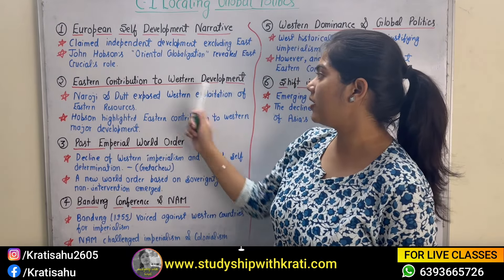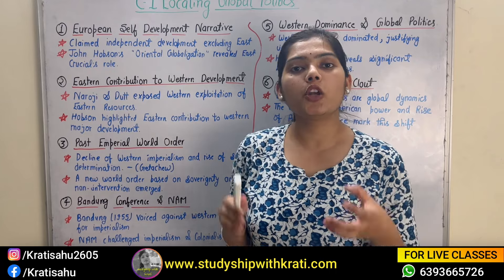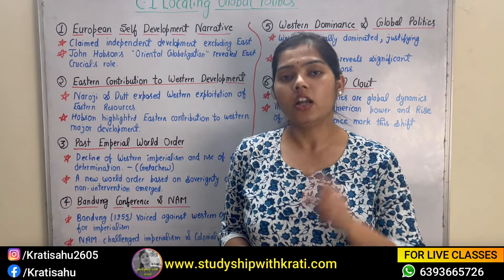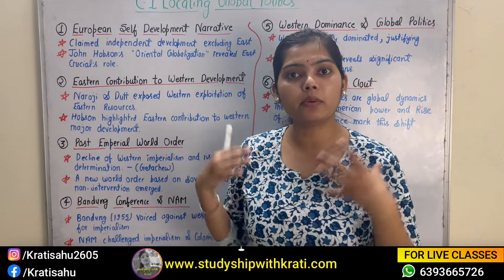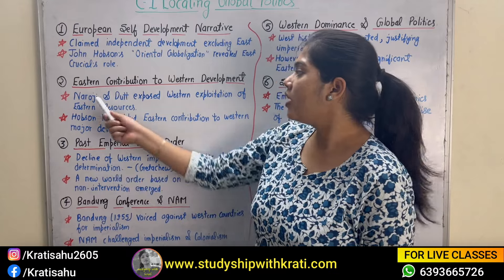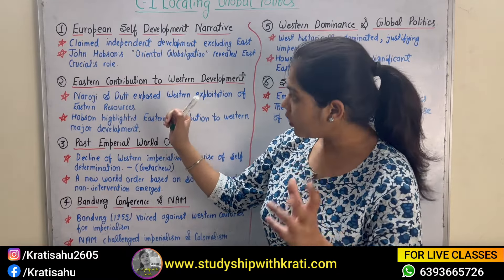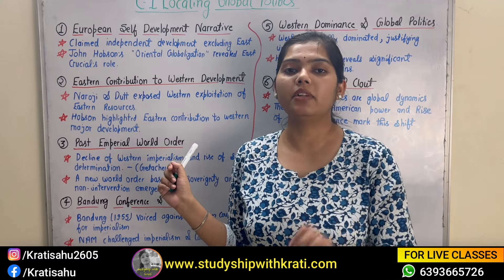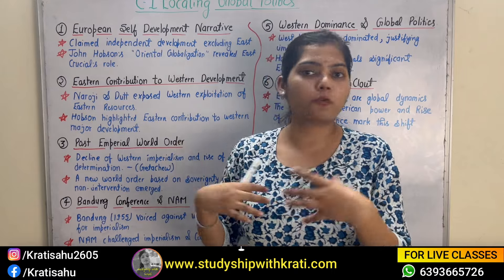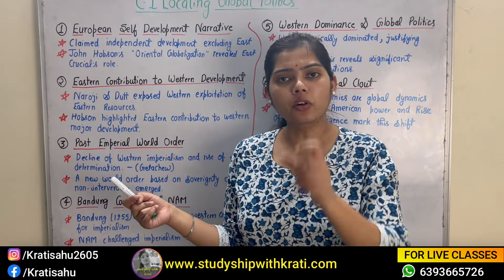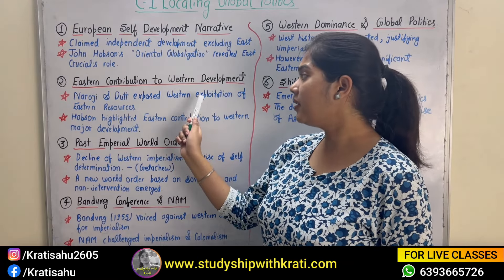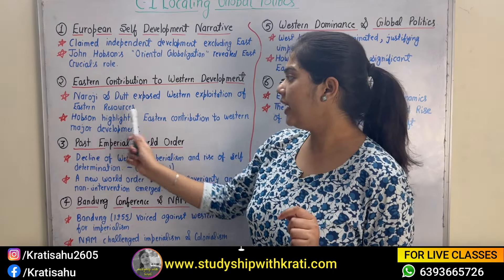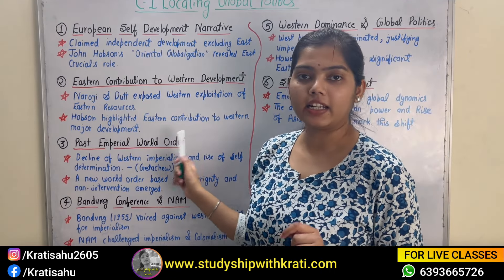The next topic is Eastern contribution to Western development. We all know how imperialism and colonialism led to Asia and Africa being exploited by their colonial masters, who used raw resources, land, labor, and economic output. Dadabhai Naoroji and others studied this — their work is public and they have provided reading lists. They exposed that the West was still exploiting Eastern resources for its own development. Hobson highlighted that Eastern contribution was major to Western development.